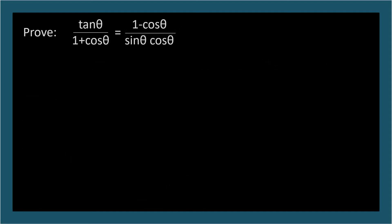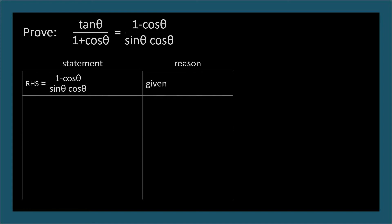Next problem. Prove tangent theta over 1 plus cosine theta equals 1 minus cosine theta over sine theta cosine theta. The right-hand side looks a little more complex, so we'll start with it and try to manipulate it until it equals the left-hand side. Pause if you'd like to try this one on your own.